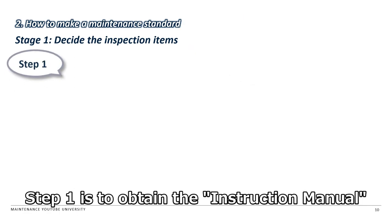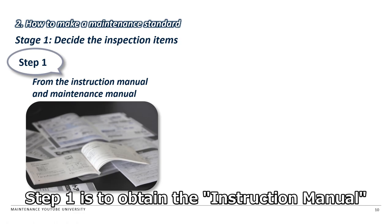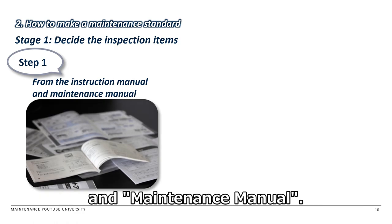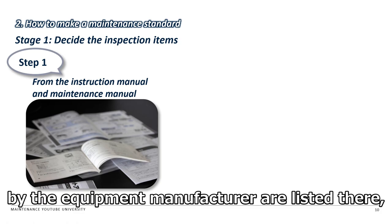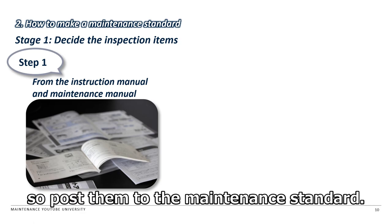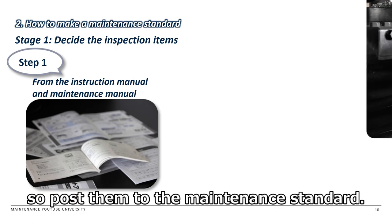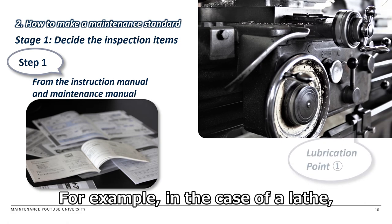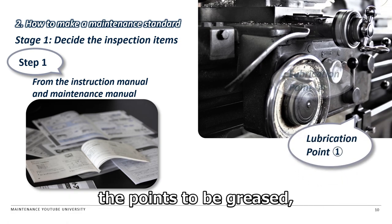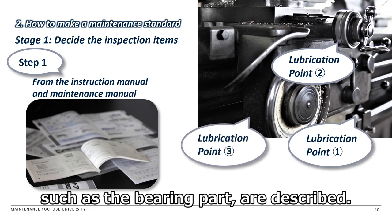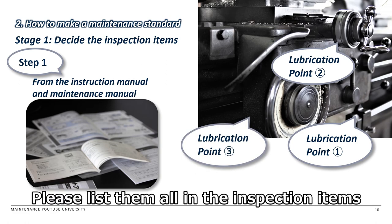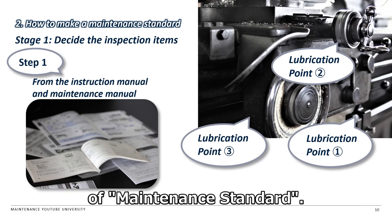Step 1: Obtain the instruction manual and maintenance manual. The minimum inspection items recommended by the equipment manufacturer are listed there, so list them in the maintenance standard. For example, in the case of a relay, the points to be greased, such as the bearing part, are described. Please list them in the inspection items of the maintenance standard.